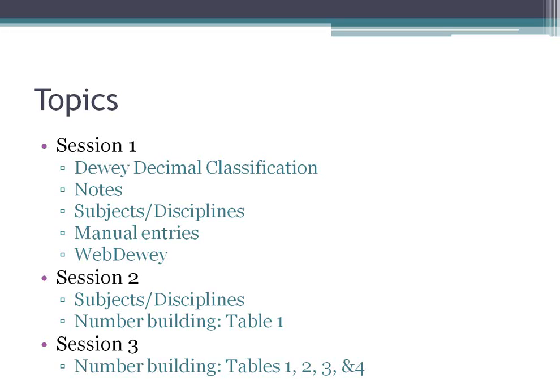Next week in session two, we'll talk more about subjects and disciplines and how to assign numbers for items that have topics in multiple disciplines, and we'll get started on the concept of number building. A lot of working with Dewey is using the various tables in order to build numbers, so we'll work with Table 1 next week. Then session three, we'll continue at the very end of Table 1 and then Tables 2, 3, and 4.